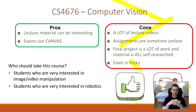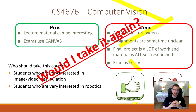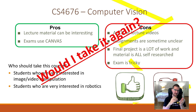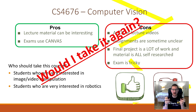Who should take this course? Students who are very interested in image and video manipulation, and students who are very interested in robotics. As for the big question — would I take it again? Sadly, no. Every other class I've taken, I've said yes. This class is really a lot. Compared to CS4675 Computational Photography, which I took as an informal prerequisite, I was disappointed. I think the workload was more overwhelming than it needed to be, and I was really disappointed in that final project.